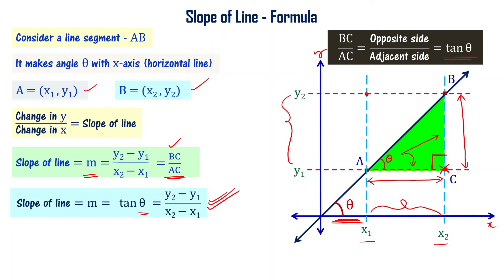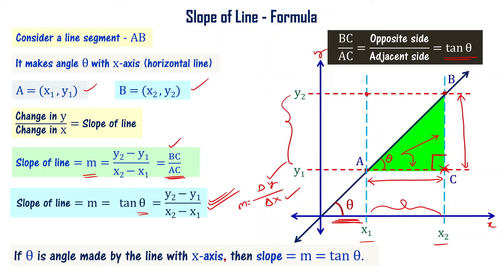Please note this formula: slope of line M equal to tan theta, that is equal to y2 minus y1 divided by x2 minus x1. We also write this as delta y divided by delta x, or M equal to change in y divided by change in x. If theta is the angle made by the line with the x-axis, then slope is tan theta. For example, if theta equal to 45 degrees, then slope equals 1, since tan 45 equals 1.